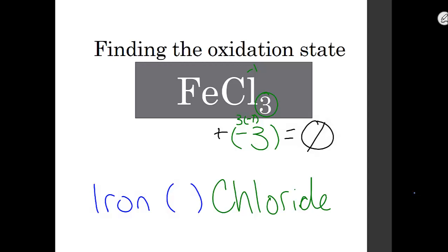Iron has to neutralize that charge. So something minus three has to equal zero. Iron must, in this case, be a plus three. So this would be iron three chloride.